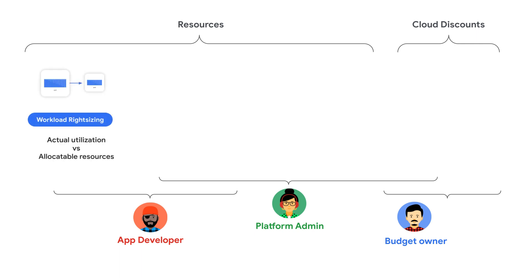The first signal in the resource category is workload rightsizing. Workload rightsizing is comparing requested resources to actual utilization and understanding whether developers are using the resources they requested for their applications. These steps ensure that the resources aren't over or under provisioned. To reduce resource waste and avoid intermittent issues with performance and reliability, resource requests must be set appropriately by understanding your application capacity requirements.